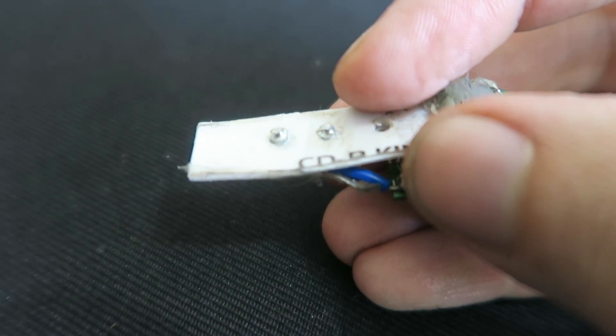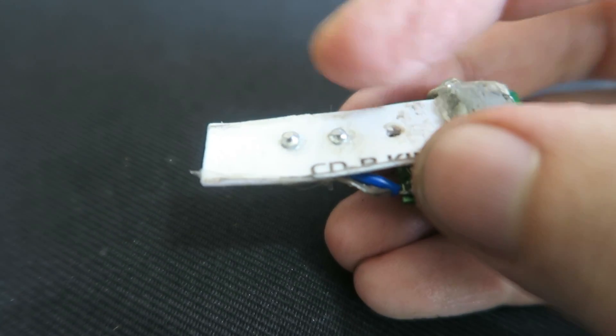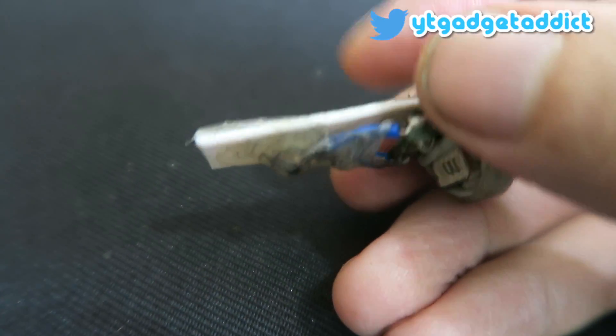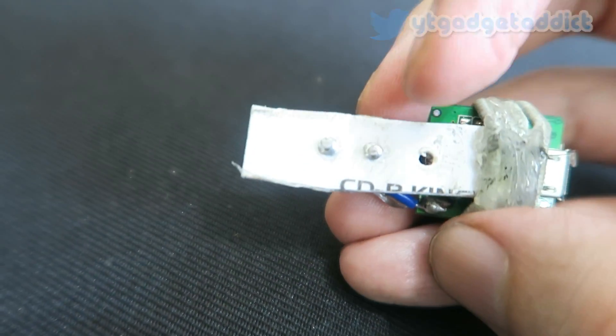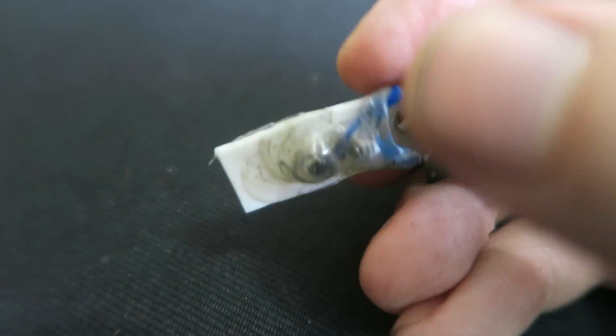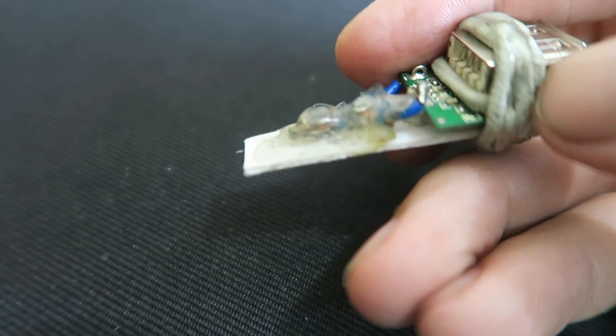So you can see the two screw heads poking through there. I did file them down so they're not sharp. And I didn't solder the wires because I had a problem soldering to these screws. So I just wrapped them around the screws and then hot glued it all in place.